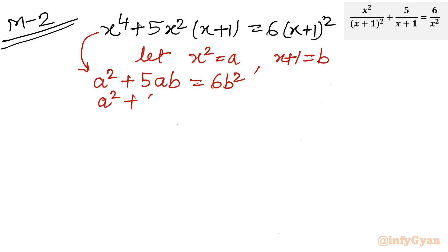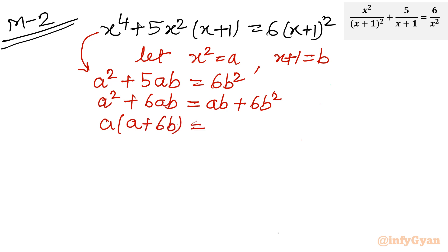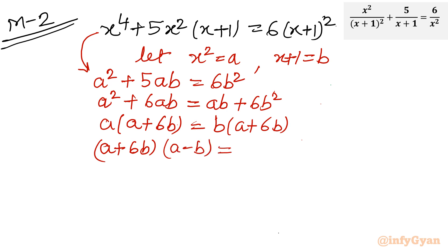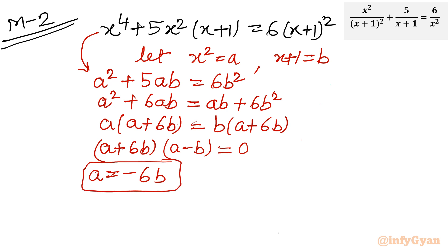Factoring: left side gives a(a + 6b), and right side gives b(6b + a), which is b(a + 6b). Taking all terms to the left: (a + 6b)(a − b) = 0. This gives two cases: a = −6b, leading to one quadratic equation, and a = b, leading to a second quadratic equation.